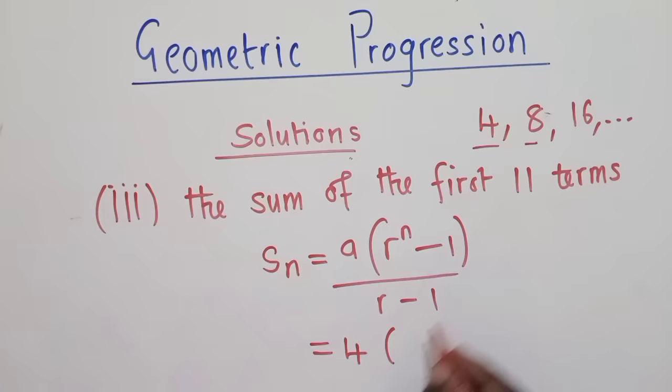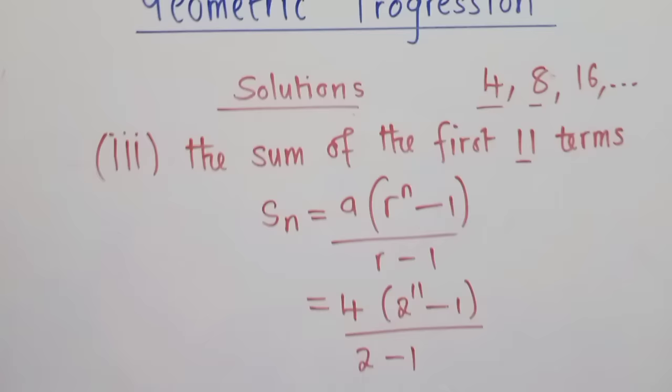What is our A? Remember, we said the first term is our A. Open bracket. Our r, we found 2. And then n here is what we've been asked, it's 11, minus 1 here, over 2 minus 1.